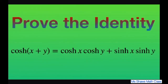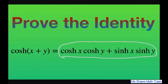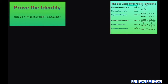Hi everyone. We're going to prove the identity that hyperbolic cosine of x plus y equals the given expression. We're going to start on the right-hand side of the equation and make it look like the left-hand side using our definitions of hyperbolic functions.